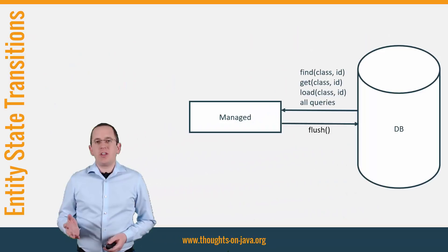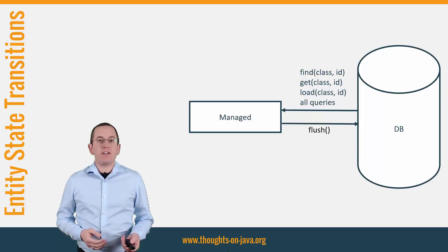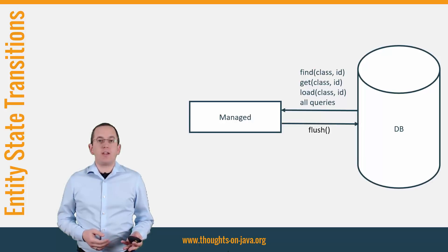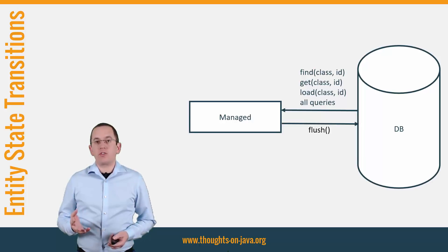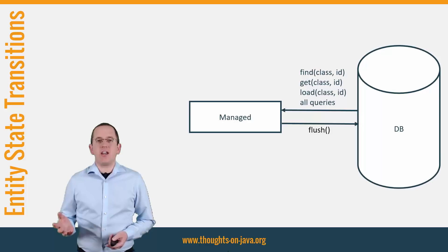Before we get into the details of these 4 methods, I need to give you a quick introduction to JPA's entity lifecycle states. If an entity is attached to the current persistence context, it has the lifecycle state managed. That means that it is mapped to a database record. Your persistence provider generates the required SQL insert and update statements to propagate all changes. A managed entity is also stored in the first level cache.